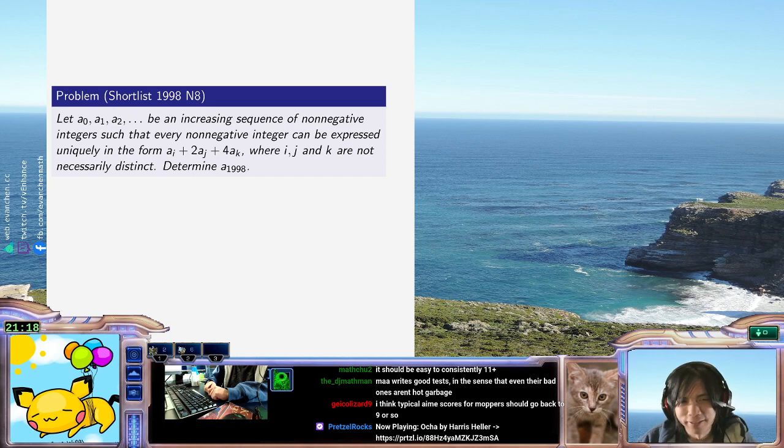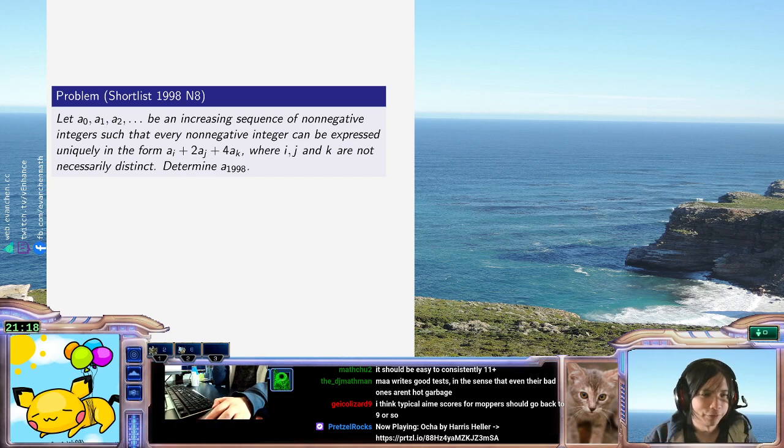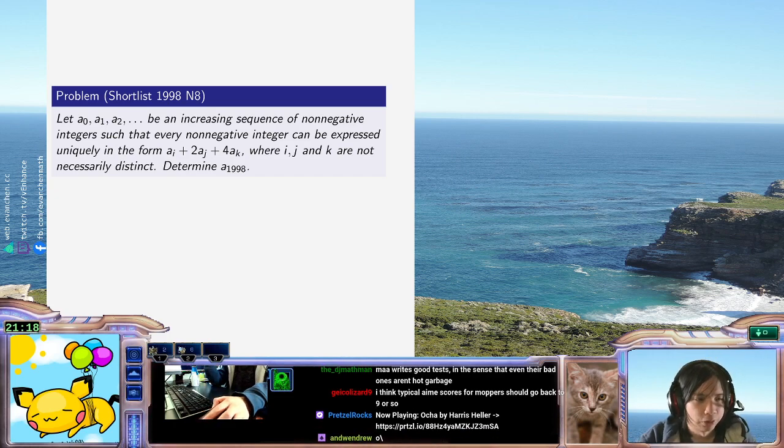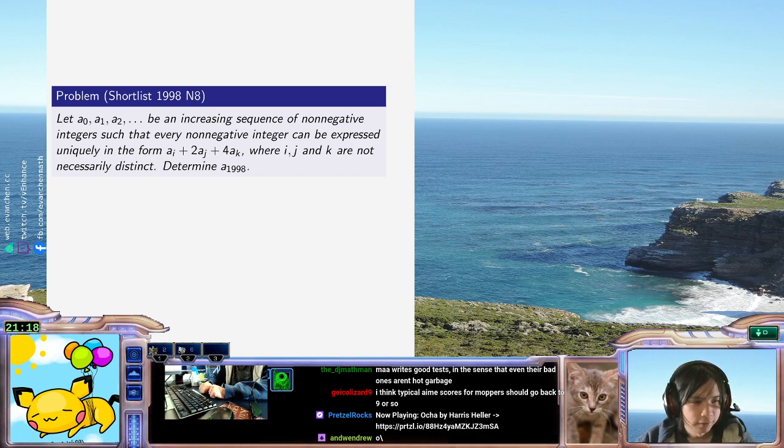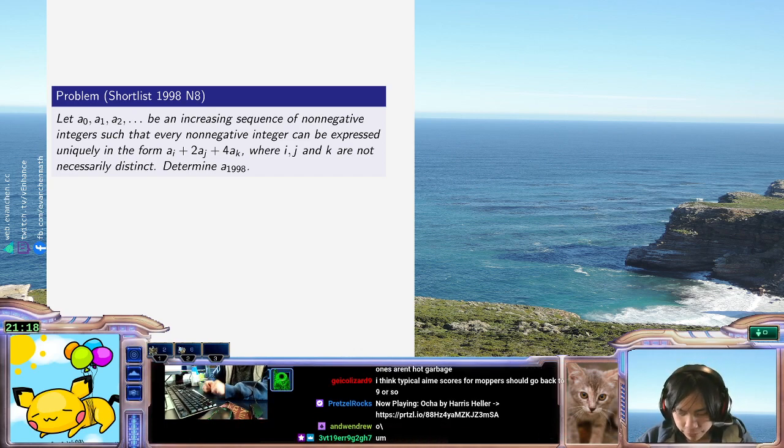The reason I said this looks easy is because it looks really determined. The fact that the problem is asking us for 1988 means that we should basically be able to determine the whole sequence. So I'm optimistic because if we can determine the whole sequence, then that gives us a lot of footholds to start with.